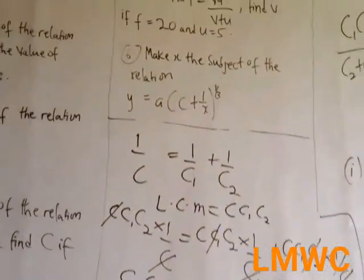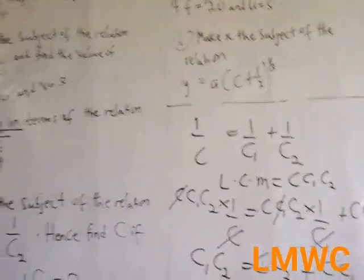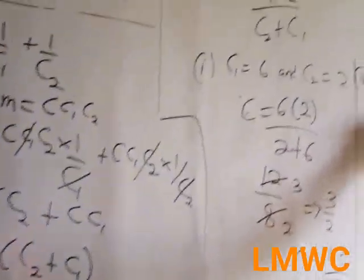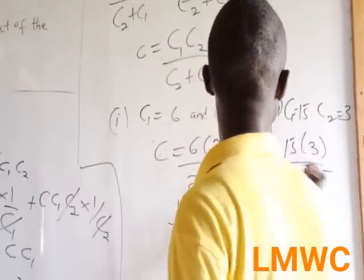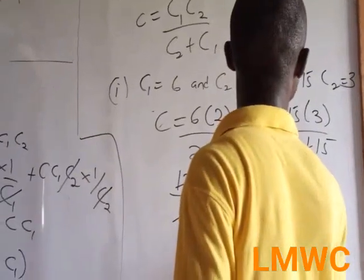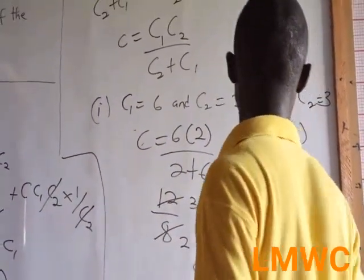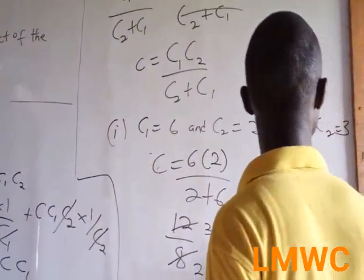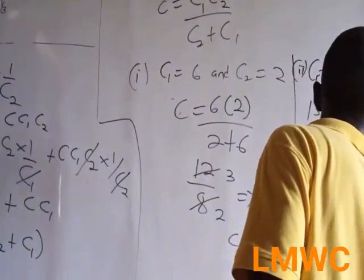Part (ii): if c1 = 15 and c2 = 3. So c = (15 times 3) over (3 + 15) = 45 over 18. Simplifying: 3 goes into 45 fifteen times, 3 goes into 18 six times, giving 15 over 6. Then 3 goes into 15 five times, 3 goes into 6 twice. So c = 5 over 2.